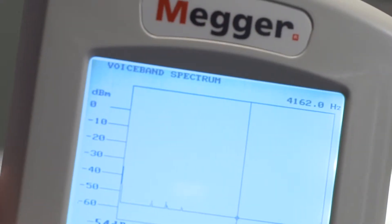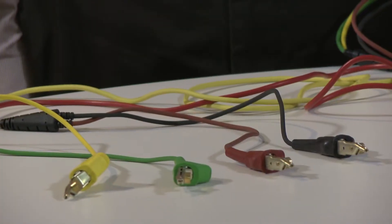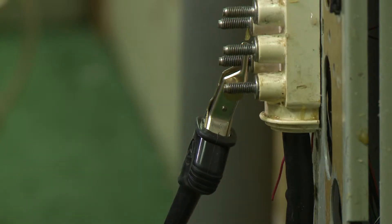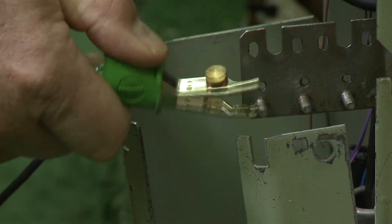Measurements in this range can aid in identifying power influence that can affect service. To perform a Voiceband Spectrum Analyzer test, connect the test leads: black to tip, red to ring, and green to ground.